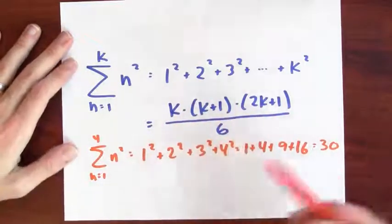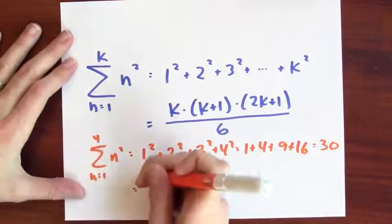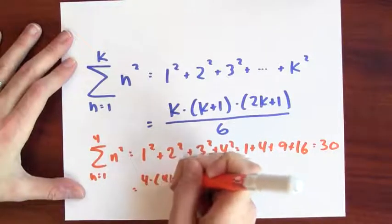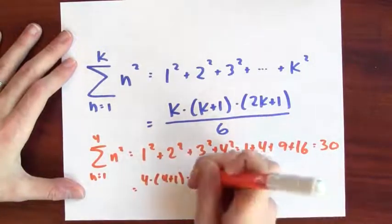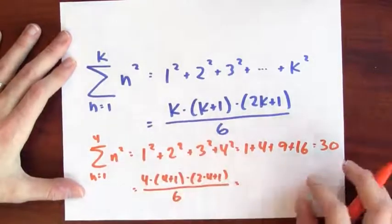Is that really what this formula is giving? Well, let's check it out. So I'm going to put in 4 for k. 4 times 4 plus 1 times 2 times 4 plus 1 all over 6. What's that?